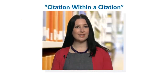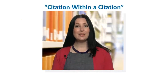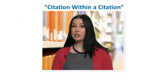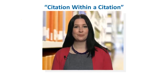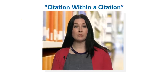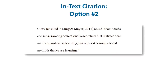But what if you want to cite Clark? In this case, APA recommends locating the original article written by Clark. It's always best to use the primary source when possible. But if you are unable to locate the original source and want to refer to Clark, then you must indicate in parentheses "as cited in Sung and Meyer." This indicates that you used the secondary source – in this case Sung and Meyer – and are not actually citing Clark's original article.